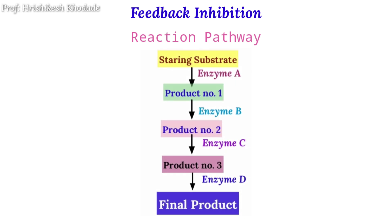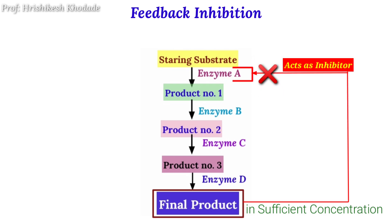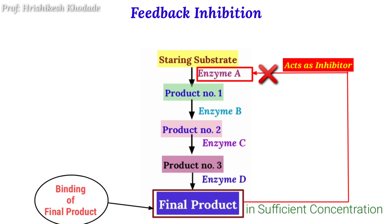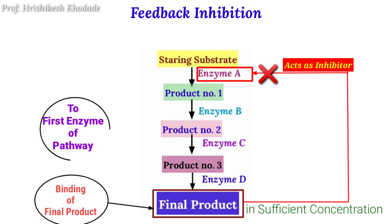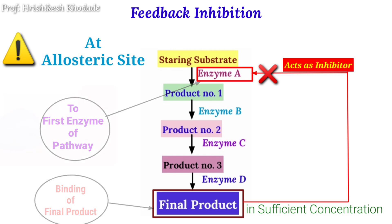To explain this, using the pathway we just discussed: when the final product reaches a certain concentration, this final product stops enzyme A, which is the first enzyme involved in this pathway. The binding of the final product to enzyme A occurs at the allosteric site of enzyme A.